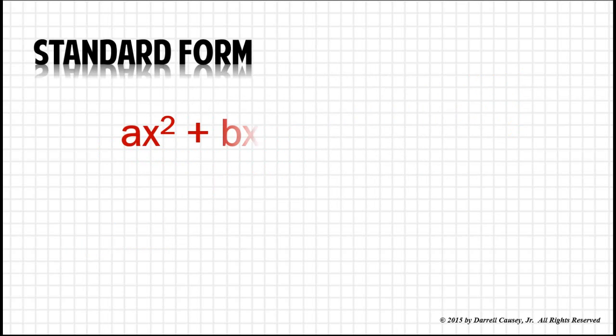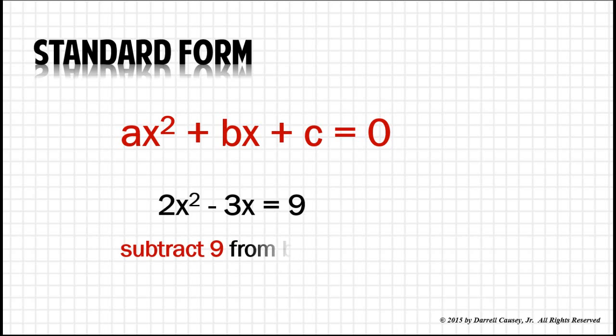First, let's look at the standard form of a quadratic equation. AX squared plus BX plus C equals zero is standard form. So when we have something like 2X squared minus 3X equals 9, we must subtract 9 from both sides and get an equation set equal to zero.